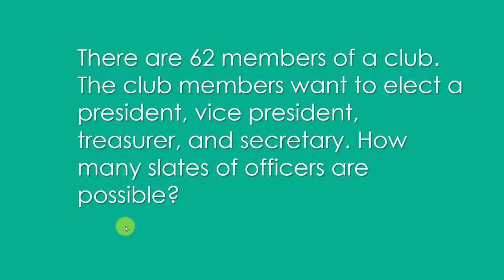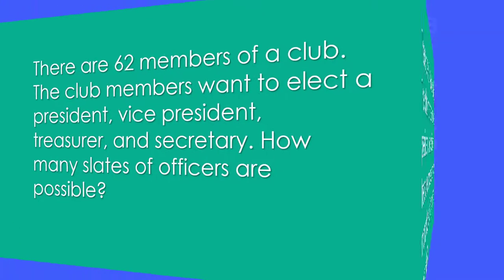Well, here logically, they select a president, then that person is taken out of the pool, so the order does matter. They select the president first, then the vice president, then the treasurer and secretary. So we need to use permutations to do this.